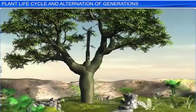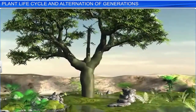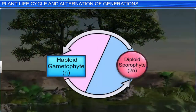Thus, every plant cycle is marked by alternation of the sporophytic with the gametophytic phase. However, the dominant phase differs in different plant groups.